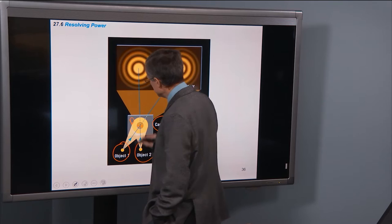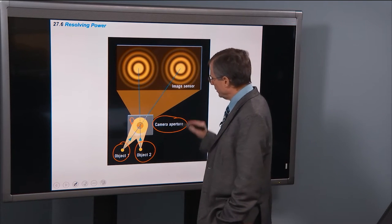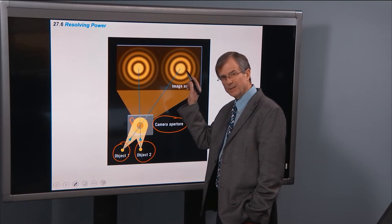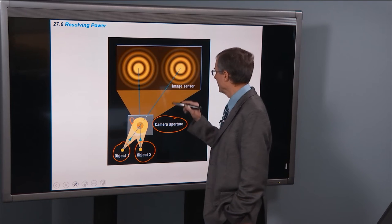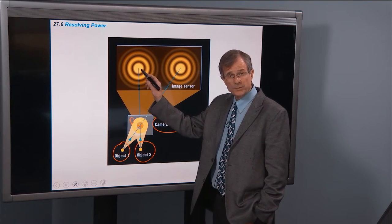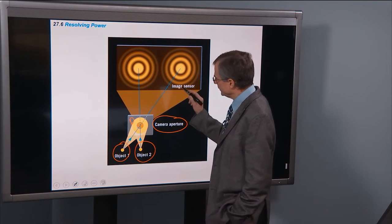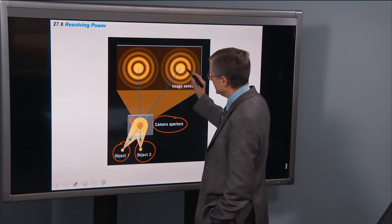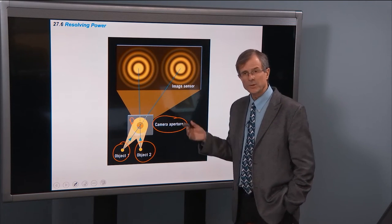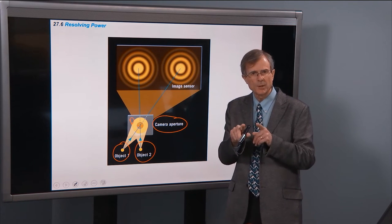And let's say it has a diameter d. Then what's going to happen is that object one is going to produce this diffraction pattern on the screen. And object two is going to produce also a diffraction pattern on the screen. And if they're well separated like this, you can tell on the image sensor, on the camera, or as you're looking through the eyepiece of the telescope, you can tell that there are two separate objects out there.